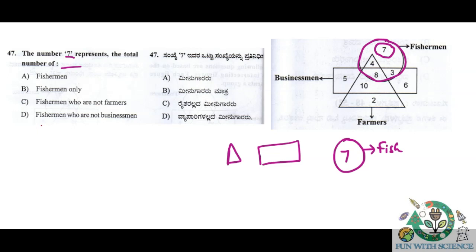Only fishermen — so the answer is option B. Okay guys, intersecting figures is a very easy topic. If you have any doubts, comment in the comment section. If you like this video, please like, share, and subscribe to our channel. Thank you.